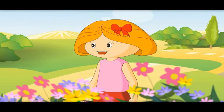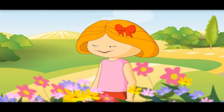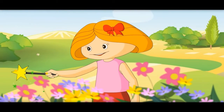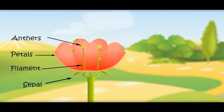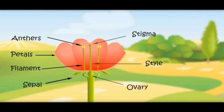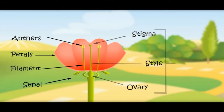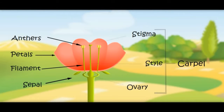Now come the female parts. The female parts are stigma, style, and ovary. I know — all these female parts are called carpel.